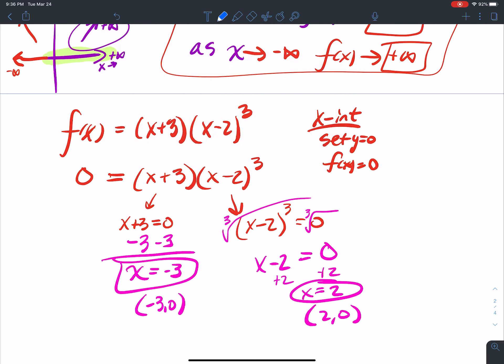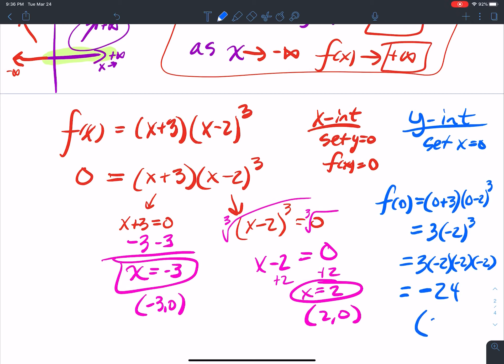To get the y-intercept, set x equal to 0. So what does that look like? Everywhere I see an x, I put a 0. So it's 0 plus 3 times 0 minus 2 cubed. So I get 3 times negative 2 cubed. Negative 2, 3 times, gets me a negative number. Negative, negative, negative makes a negative. And then 2, 2, 2 multiplied is 8 times 3. That's 24. So my y-intercept is 0, negative 24.